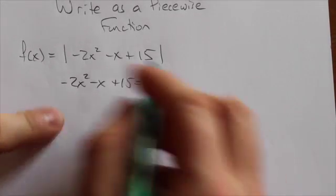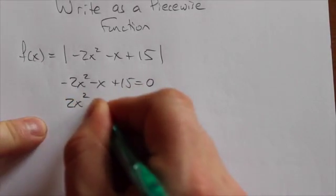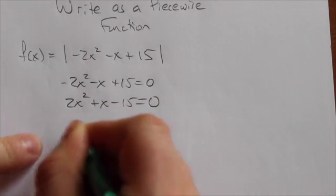But I'm lazy, so I'm gonna divide through by that negative first to make that 2x squared plus x minus 15 equals zero.